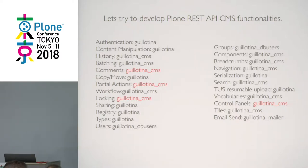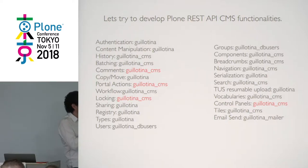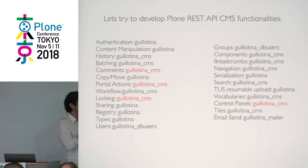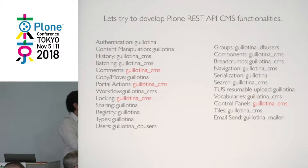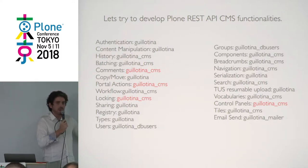Breadcrumbs and navigation — specific endpoints from the Plone REST API — are already implemented in Guillotina CMS. Serialization and deserialization are also in Guillotina. The search API is already implemented. TUS file upload is in Guillotina. Vocabulary management, defining which languages you have, is implemented in Guillotina CMS. Control panels are still not provided — it's easy to implement if somebody has that use case. Tiles are already in Guillotina CMS, as is sending email.